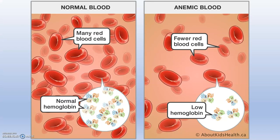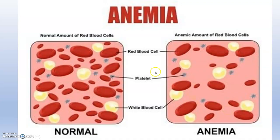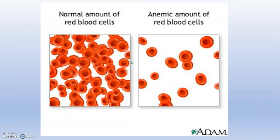We can move to the blood pictures of anemia. This is normal RBC production with normal hemoglobin. This is anemic blood — you can see RBCs are very few and the concentration of hemoglobin inside the RBC is also less. You can see the blood pictures.